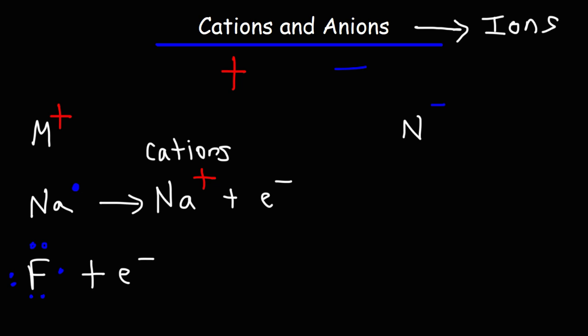Non-metals tend to be very electronegative. They have a strong desire for electrons and the ability to attract electrons to themselves. And so when fluorine captures an electron, it's going to turn into the fluoride ion.